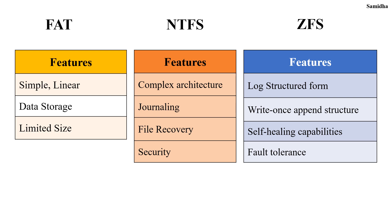Next is NTFS — New Technology File System. Features of NTFS include complex architecture, journaling, file recovery and security. Its architecture is multi-layered. Journaling means it maintains a log of file system changes for crash recovery. File recovery means it stores detailed file metadata, which helps reconstruct deleted or damaged files. For security, it uses Access Control Lists, which determine rules about who can access or modify files.